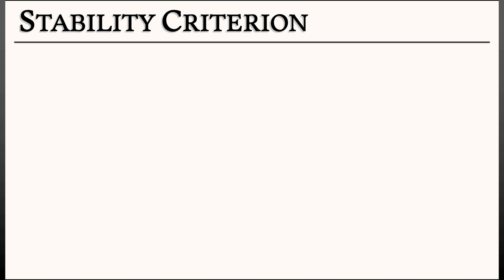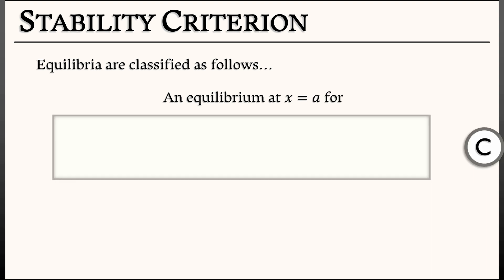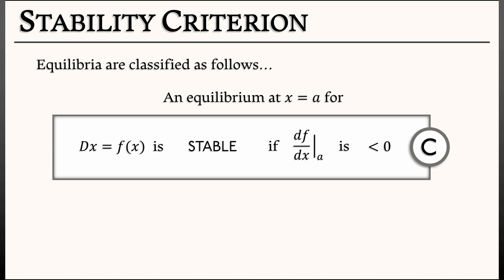So given that, the stability criterion is as follows. An equilibrium x equals A for a continuous time dynamical system dx equals f of x is a stable equilibrium if the derivative of f with respect to x at A is negative. Why? When lambda is negative, then e to the lambda t is going to zero. That means nearby solutions converge to that stable equilibrium.